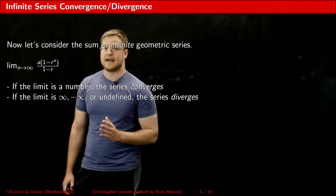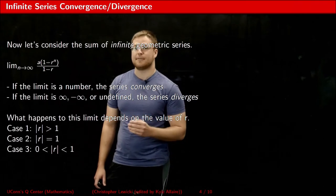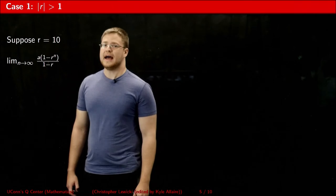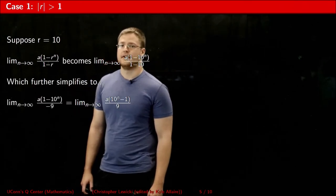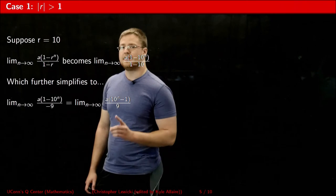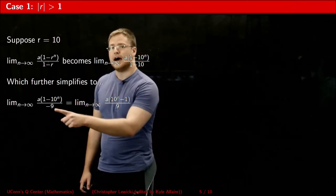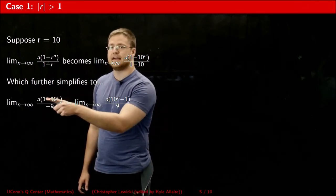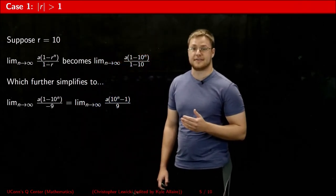I can narrow down what the value of r could be to three possibilities, and I'm going to look at each of these possibilities case by case and show you what happens to the limit. To illustrate what happens if the absolute value of r is greater than 1, let's suppose that r is equal to 10. I substitute that into the limit and simplify it. Then I rewrote this so that I now have a positive denominator by factoring out negative 1 from what's in the parentheses and canceling out the common negative 1 between the numerator and denominator.